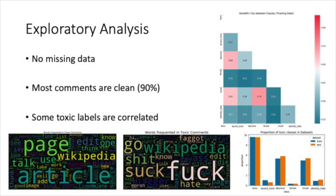In my exploratory analysis, I used Seaborn and NLTK. I found there was no missing data — no comments were actually missing. Most comments were clean; about 90% had no toxicity tags. The tags specifically were: toxic, severely toxic, obscene, threats, insults, and identity hate. Some toxic labels are correlated, measured using Kendall's Tau for binary data — toxicity is correlated with two others. Additionally, the word clouds between clean comments and toxic comments are very different, with more curse words in the toxic comments versus regular Wikipedia words in the clean ones.